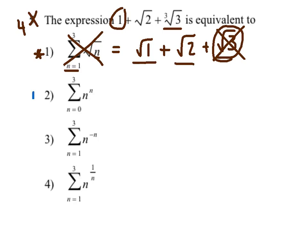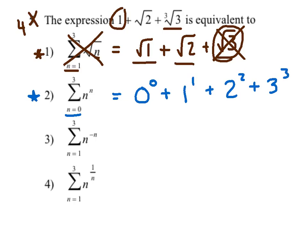Let's try number two, substituting n equals zero: that's zero to the zero power, then one, then two, then three. This one's not even close — first of all, it has four terms instead of three. And three to the third power is certainly not the same as the cubed root of three, so we can kill number two instantly.